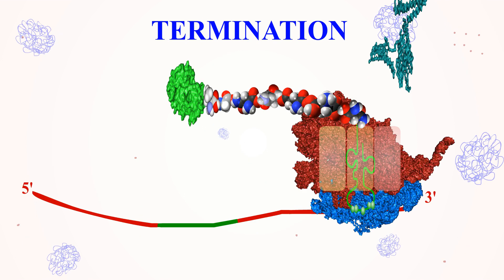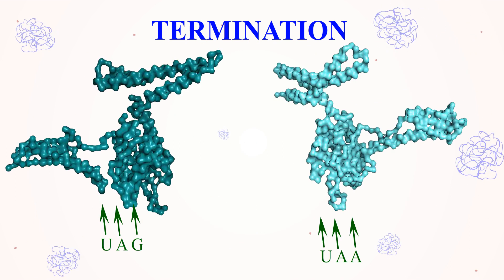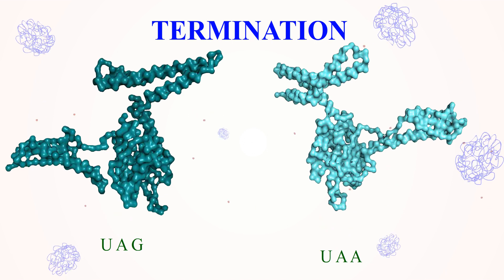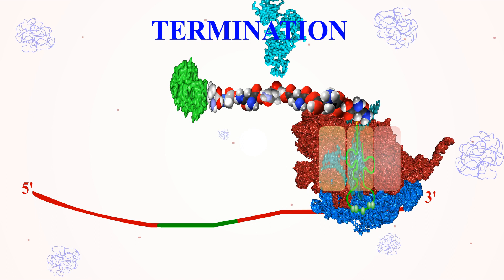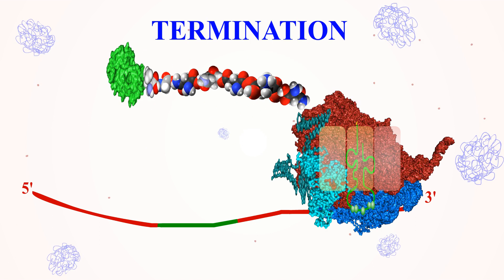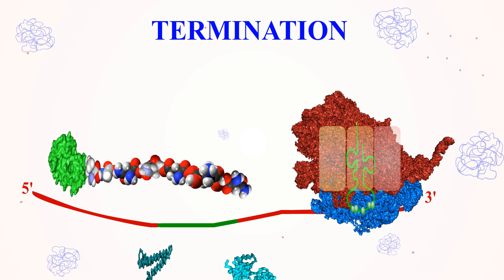During termination, the release factors RF1 and RF2 recognize the stop codons UAG and UAA respectively. This leads to the hydrolysis of the ester bond of the peptidyl tRNA. With the help of release factor RF3, this causes the release of RF1, RF2, and RF3 along with deacetylated tRNA.